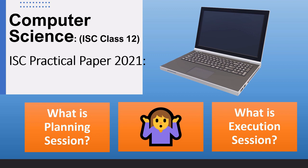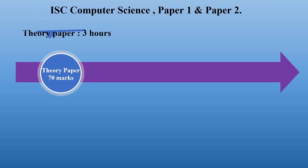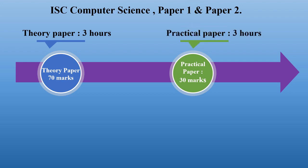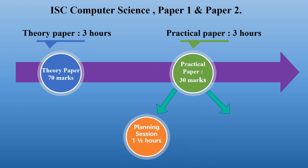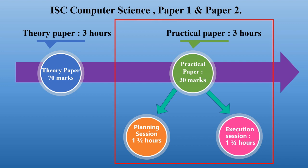So here I'm going to tackle in detail what these two sessions are and how we go about addressing both. The computer science subject has two papers: Paper 1 Theory — 70 marks, three hours; and Paper 2 Practical — 30 marks, again three hours. This practical paper is divided into two sessions: planning session, one and a half hours, and execution session, another one and a half hours.